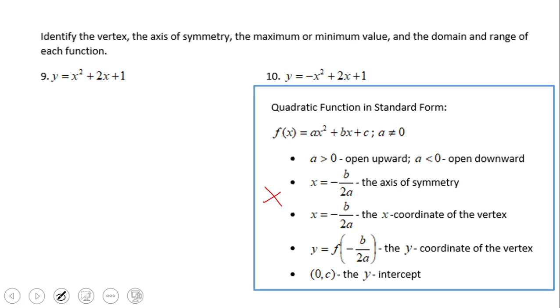So number nine, first of all we're going to identify a, b, and c. A is one, b is two, and c is one. Again, we look to that a equals one. That should tell us since a is greater than zero that the parabola is open up. We're gonna need that for the third part of the question.